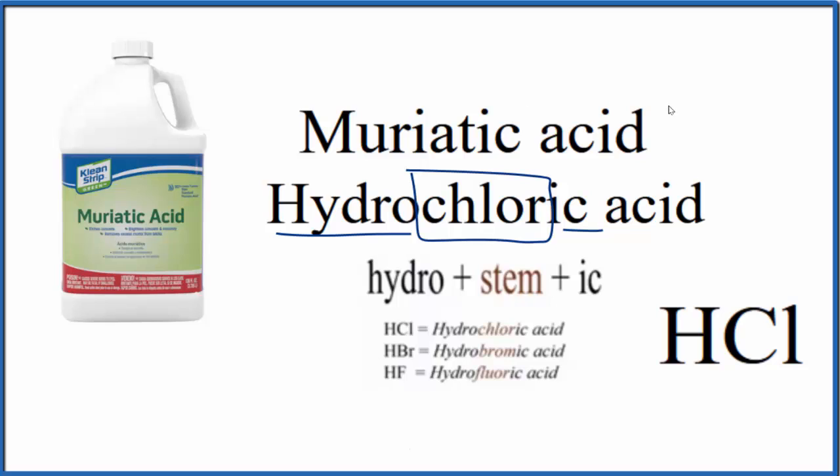So in answer to our question, muriatic acid is also called hydrochloric acid, and that is HCl.